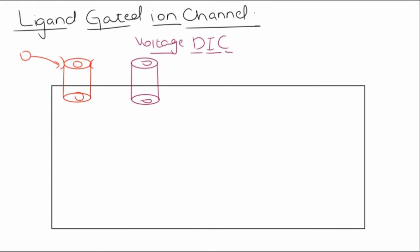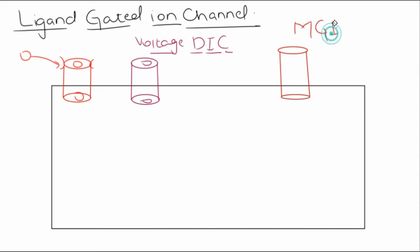There is another class of ion channels present on the cell membrane. They are basically mechanical gated ion channels. So, the first class is ligand gated ion channels, which are basically receptors. The second class is voltage-dependent ion channels. And the third class is mechanical gated ion channels. Whenever there is a mechanical stimulus or change in pressure in the cell, these ion channels will open and start the influx or efflux of cations or anions.